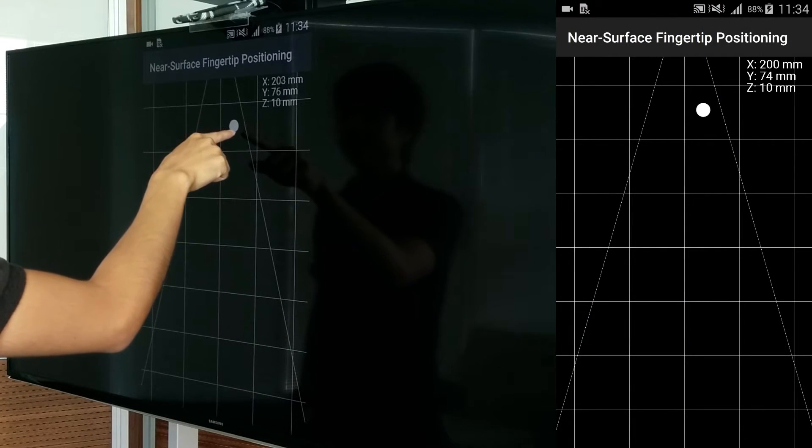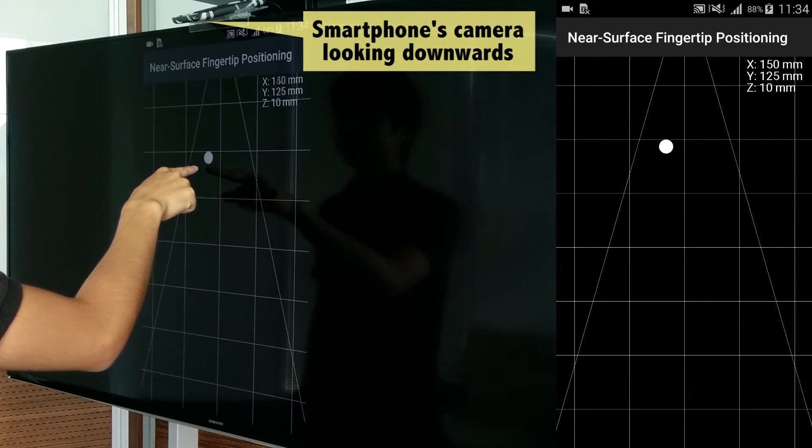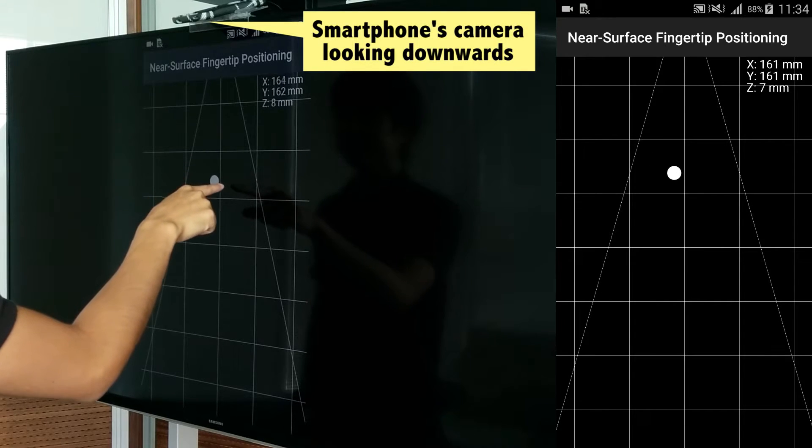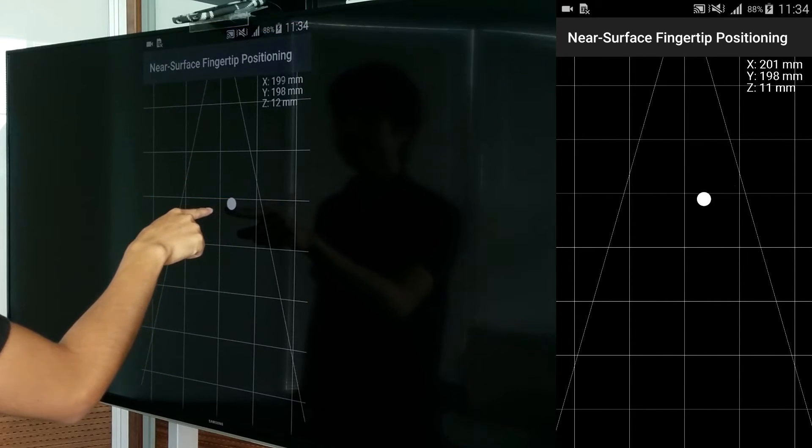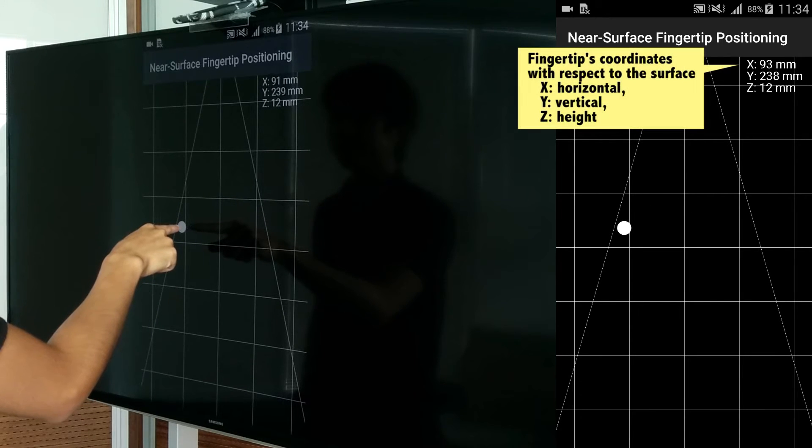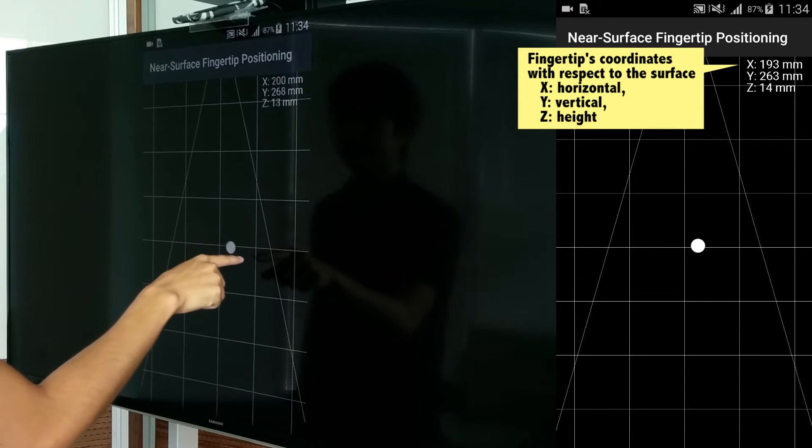Our approach is unique in that it relies on a single commodity camera device such as a smartphone. SymmetraSense allows a user to pinpoint his fingertips X, Y, and Z coordinates with respect to a target surface.